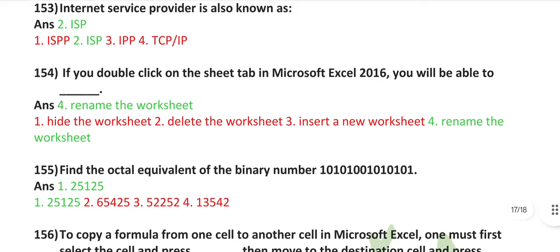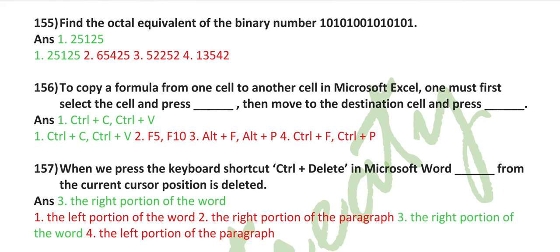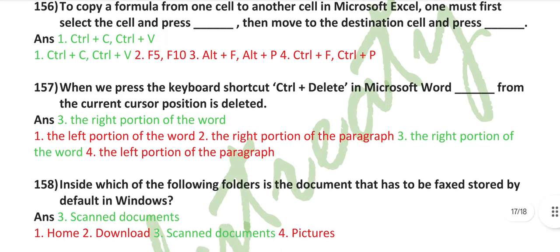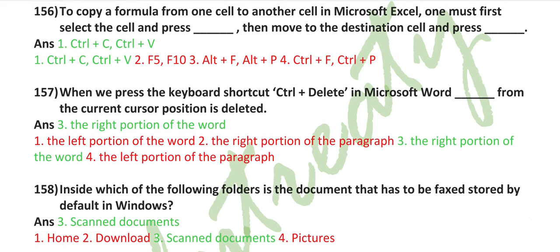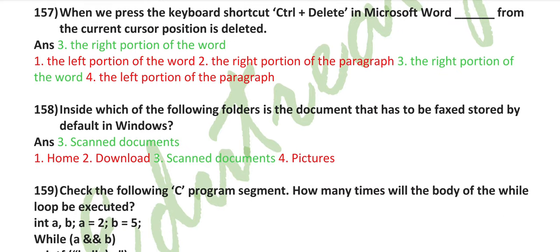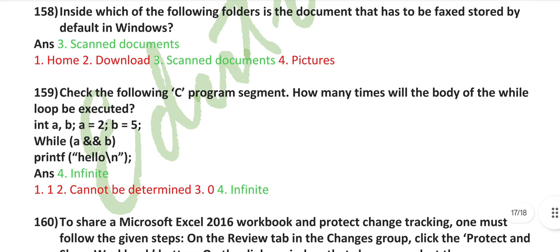If you double-click on the sheet tab in Microsoft Excel 2016, you will be able to rename the worksheet. Find the octal equivalent of the binary number 101010101010101: 25125. To copy a formula from one cell to another cell in Microsoft Excel, one must first select the cell and press Control plus C, then move to the destination cell and press Control plus V. When we press the keyboard shortcut Control plus Delete in Microsoft Word, the right portion of the word from the current cursor position is deleted. Inside which of the following folders is the document that has to be faxed stored by default in Windows? Scanned documents.